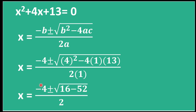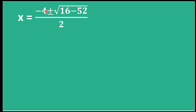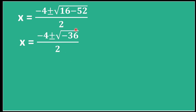Computing: 4² = 16, and 4 × 1 × 13 = 52. So we have (−4 ± √(16 − 52)) / 2 = (−4 ± √(−36)) / 2. The square root of −36 equals 6i, because we write −36 as −1 × 36, and √36 = 6 while √(−1) = i (iota).